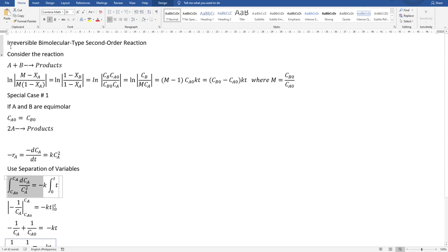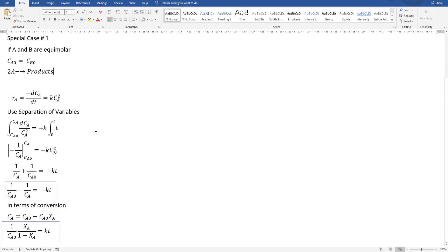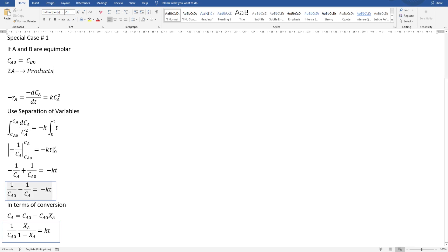For an irreversible bimolecular second order type reaction, special case number 1, when A and B are equimolar, meaning the initial concentrations for CA and CB are equal, the equations that you will be using are these equations.